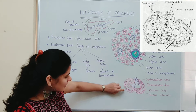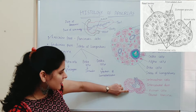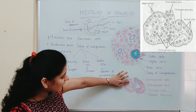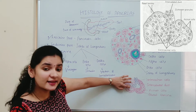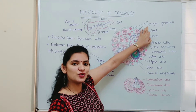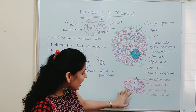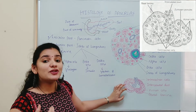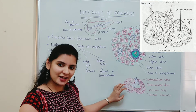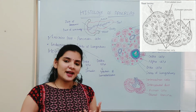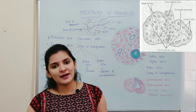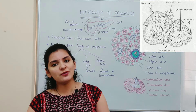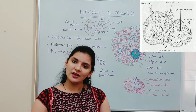Individual acinar cells have the nucleus at the basal position, and at the apical part there are numerous granules known as zymogen granules. These acinar cells secrete serous secretion which forms the pancreatic juice, consisting of different types of enzymes like amylase, trypsin, lipase, etc., which help in the digestion of different components present in the food.